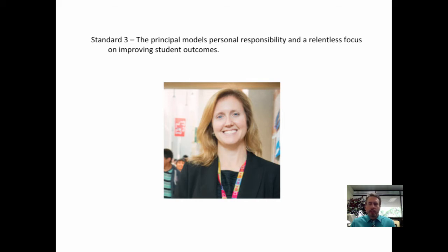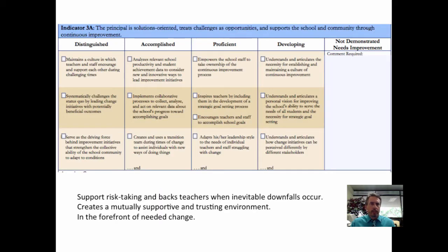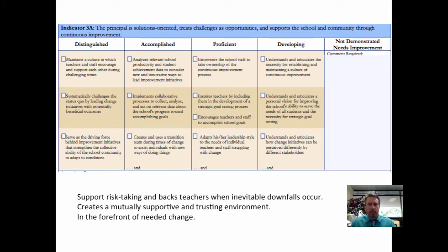They break the standard into four indicators. The first of these indicators is that the principal is solutions-oriented, treats challenges as opportunities, and supports the school and community through continuous improvement. What it really hits into as you move from proficient to distinguished is that the principal needs to support risk-taking — both for himself and for his teachers.